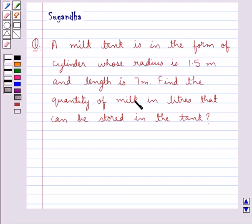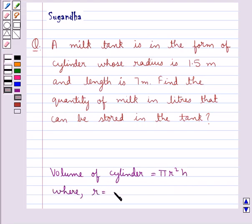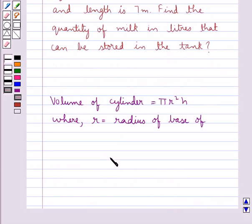Find the quantity of milk in liters that can be stored in the tank. Volume of cylinder is equal to pi r square h where r is the radius of base of cylinder and h is the height of cylinder.